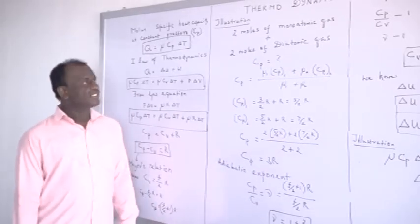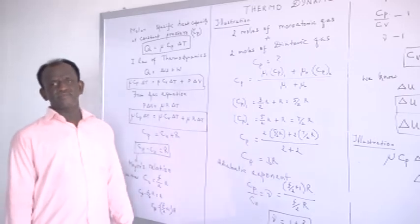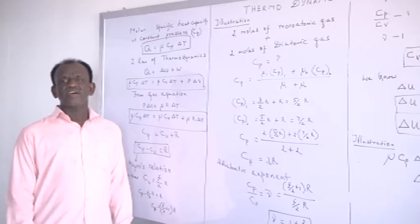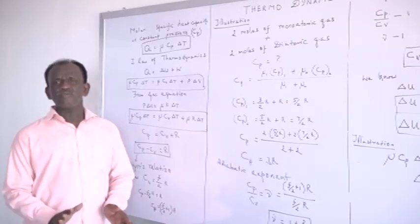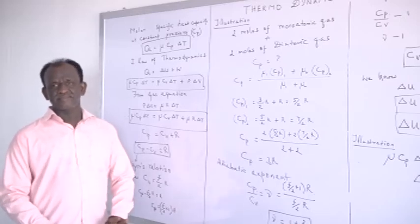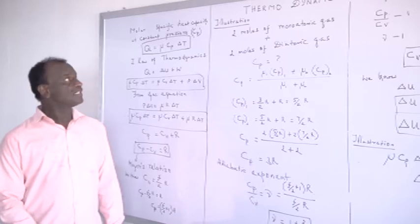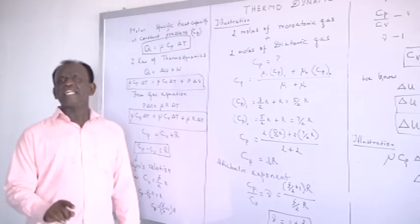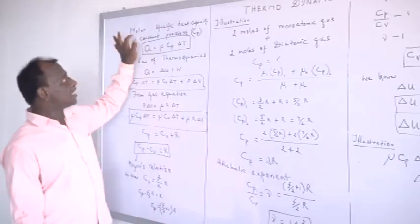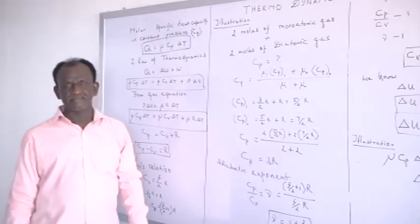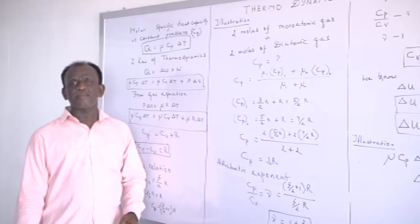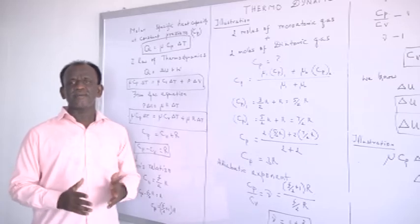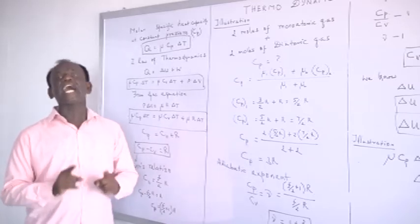The molar specific heat capacity at constant volume Cv is defined as the amount of heat energy required to raise 1 mole of a gas through 1 kelvin at constant volume. If the same process is done at constant pressure, the quantity is called the molar specific heat capacity at constant pressure Cp — the amount of heat energy required to raise the temperature of 1 mole of a gas through 1 kelvin at constant pressure.